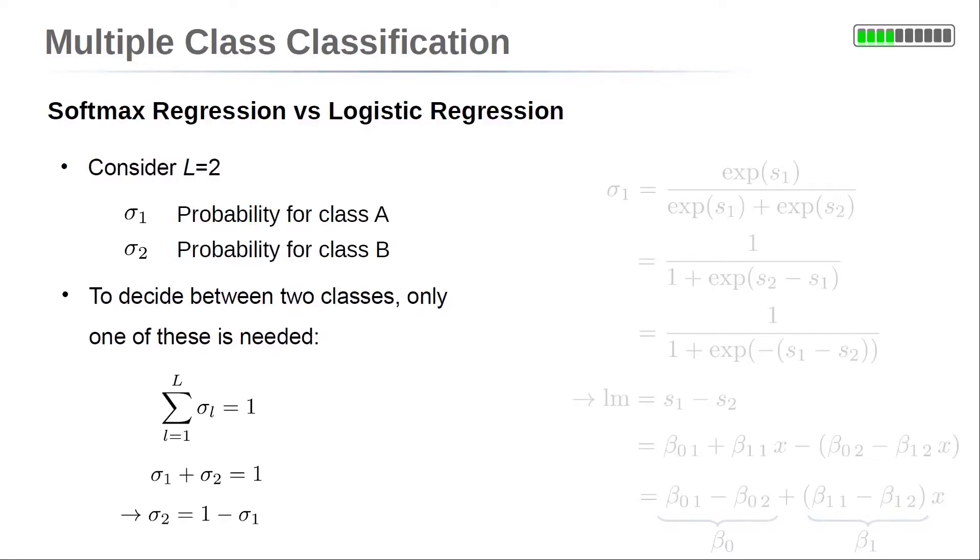Now, at first, let us consider the probabilities in more detail. To decide between class A and class B, we need only a single probability value, as we already know that sum over all probabilities is equal to 1. For just two classes, this gives σ_1 + σ_2 = 1.